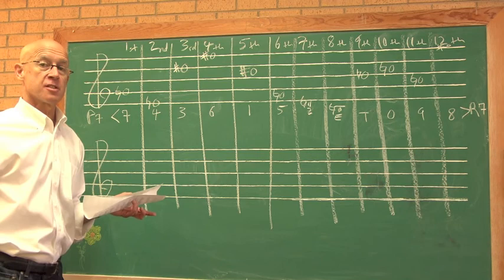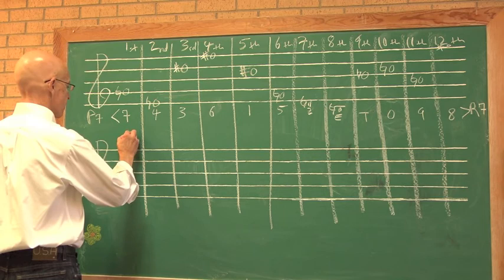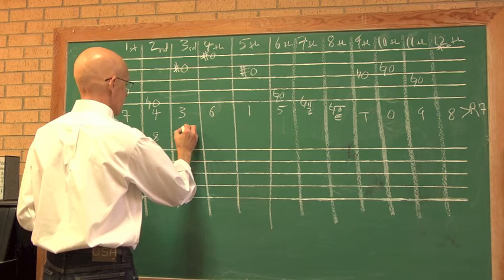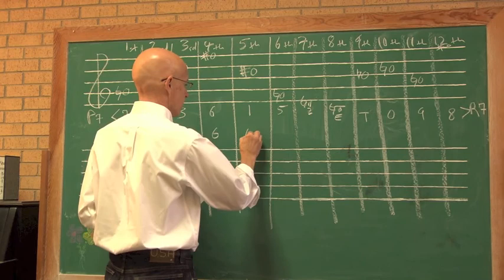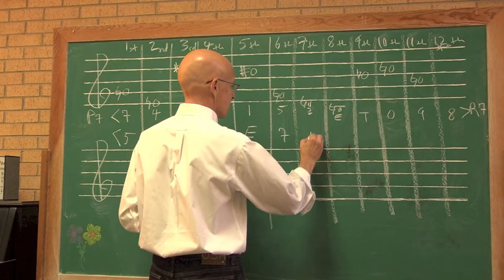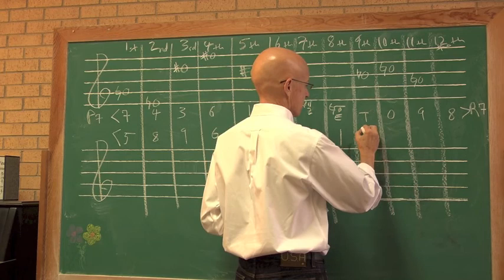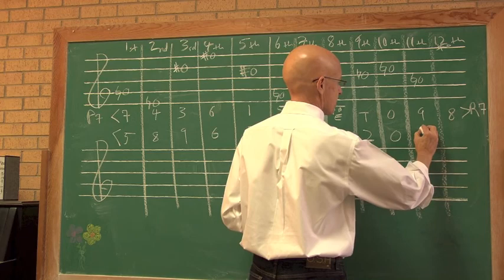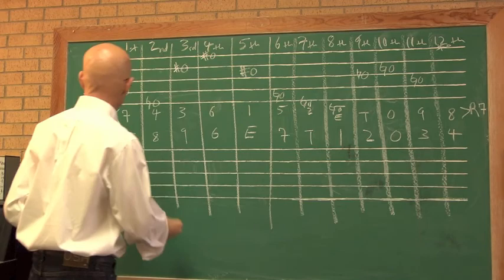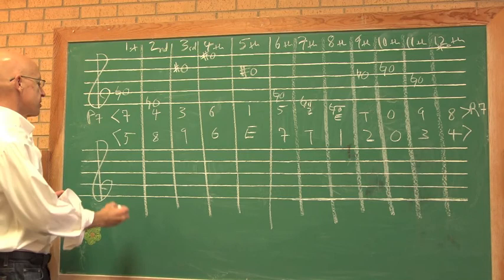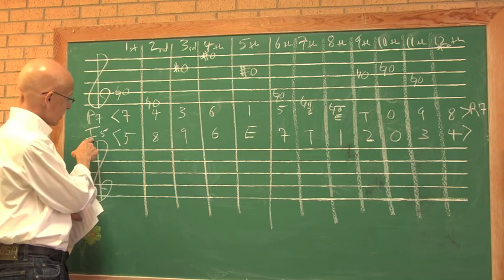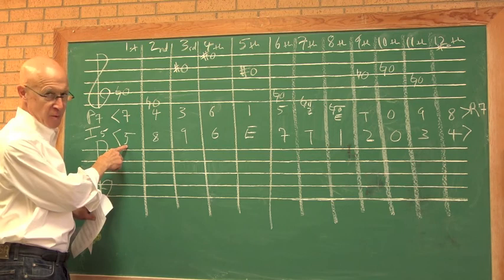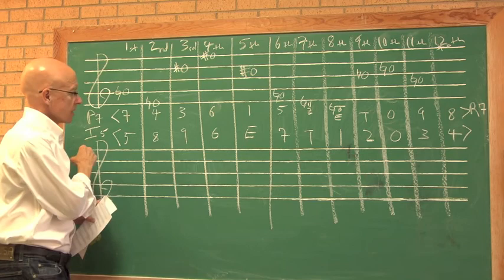Now, as you can imagine, we can also invert the row just as we've been inverting in atonal pitch class set theory. 7 inverts to 5, 4 to 8, 3 to 9, 6 to 6, 1 to 11, 5 to 7, 2 to 10, 11 to 1, 10 to 2, 0 to 0, 9 to 3, and 8 to 4. Now, if we play the inversion left to right, we have I5. If you see an I5, you know you have the inversion of a row whose prime form starts on the inversion of the first note.